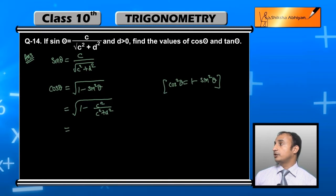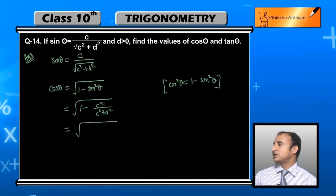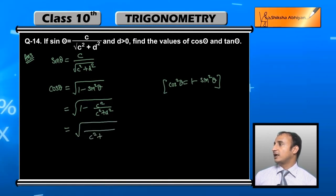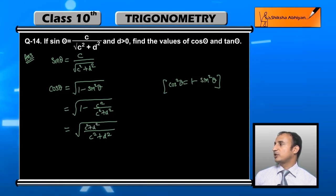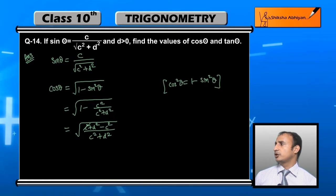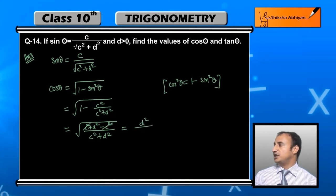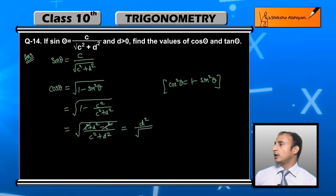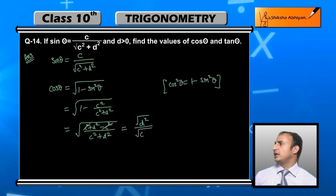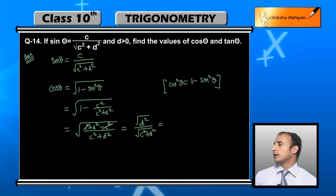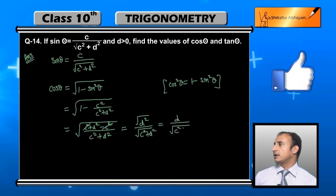Taking the LCM, we get (c² + d² - c²) / (c² + d²) under the root. So c² - c² cancels out, leaving d² upon √(c² + d²). Taking d² out of the square root gives d / √(c² + d²). So cos θ = d / √(c² + d²).